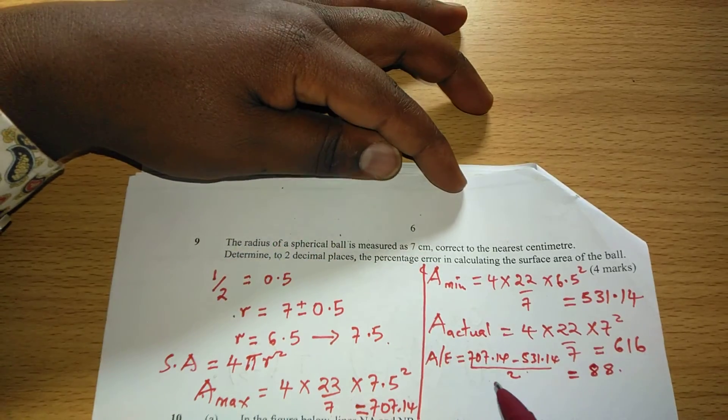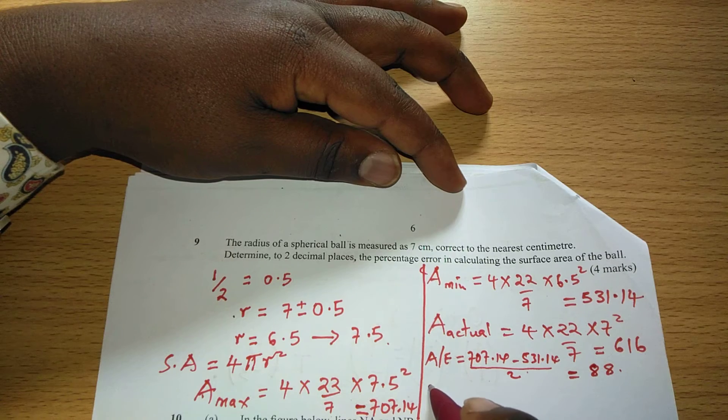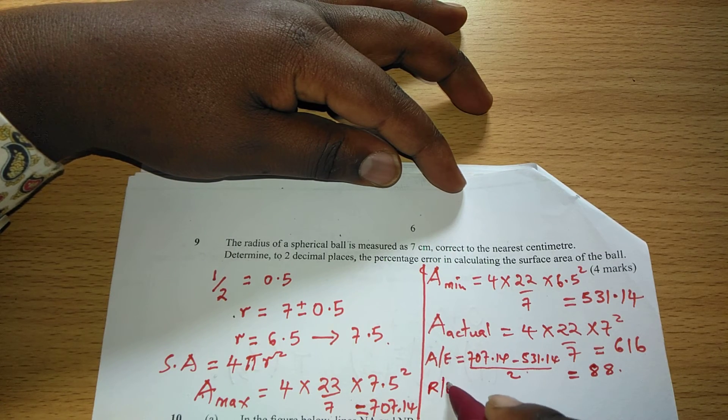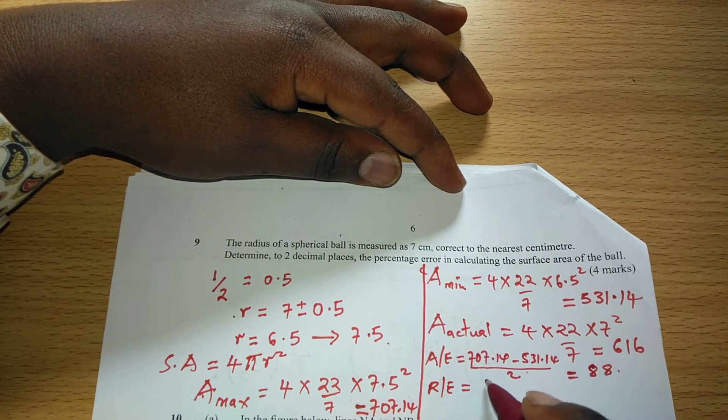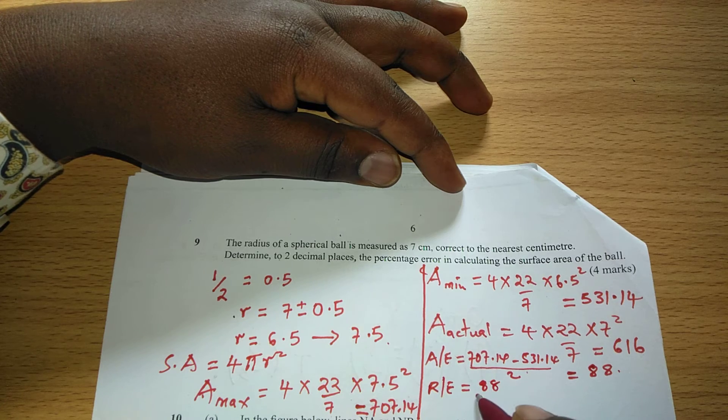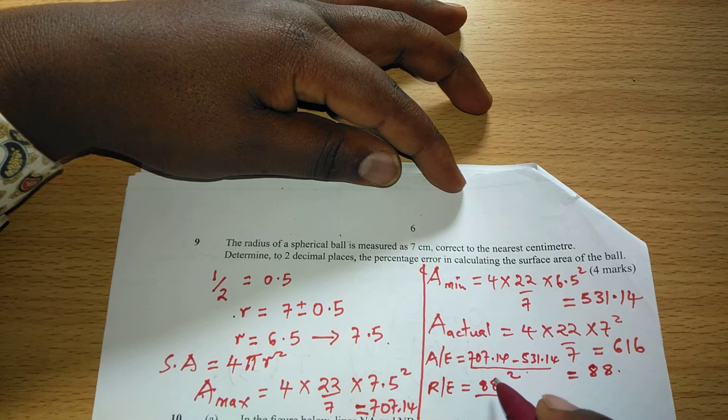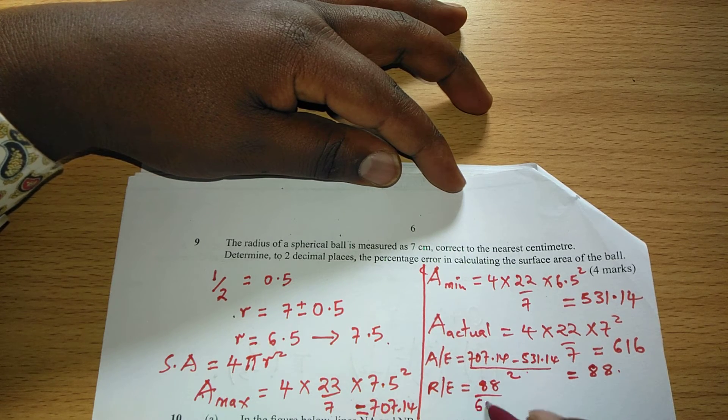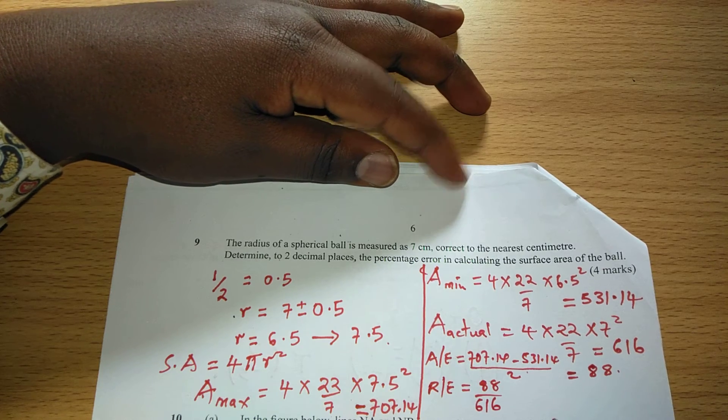So for us now to get something else called a relative error, the relative error is gotten by absolute error divided by the working area and the working is 616.